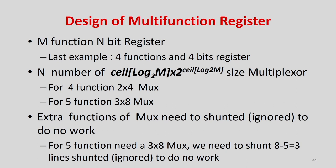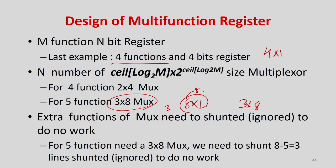We can design multifunction registers. In the universal shift register case, there are 4 functions using 4-to-1 muxes with 2 select lines. If the number of functions is more than 4, we need larger muxes — for 5 functions, a 3-select-line 8-to-1 mux. Extra mux inputs need to be centered or tied off. For 4 functions, a 4-to-1 mux suffices; for more than 4, we go to an 8-to-1 (3 select lines, 8 inputs) mux.